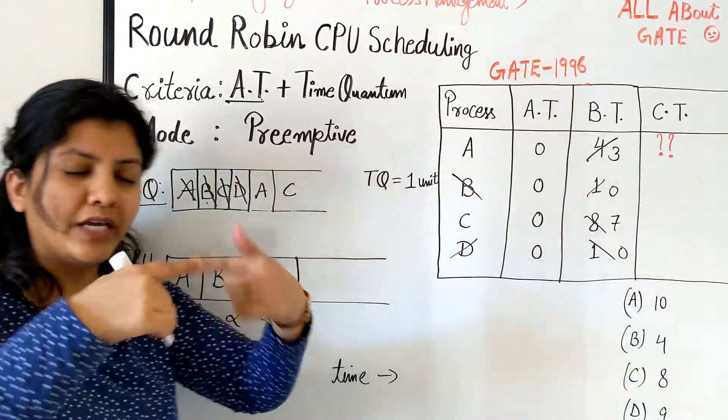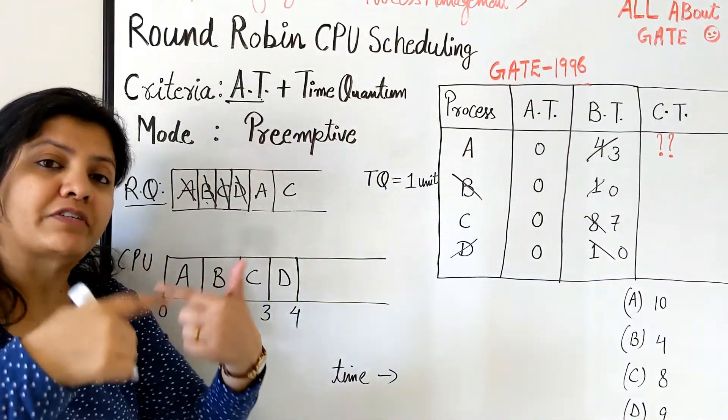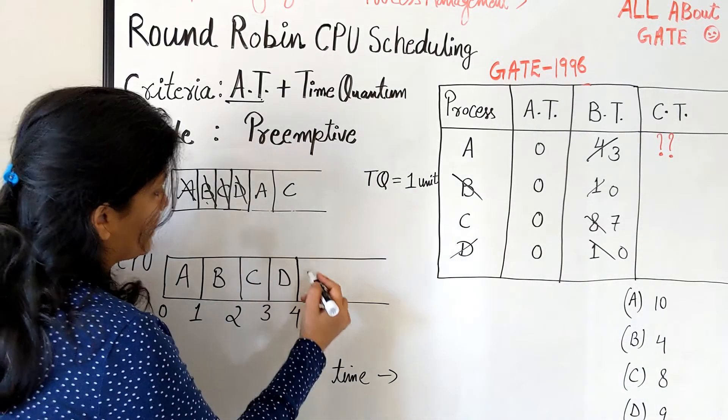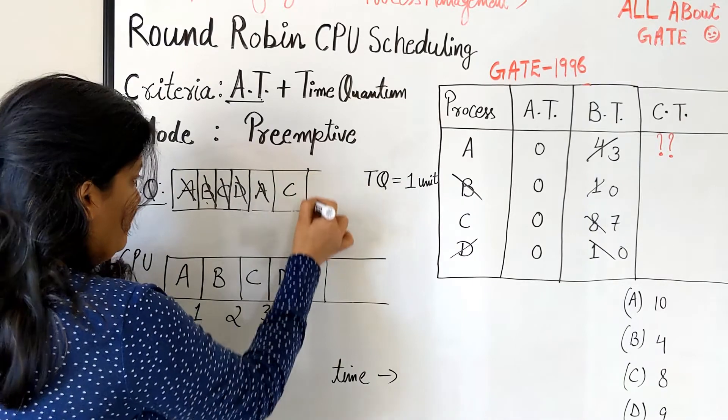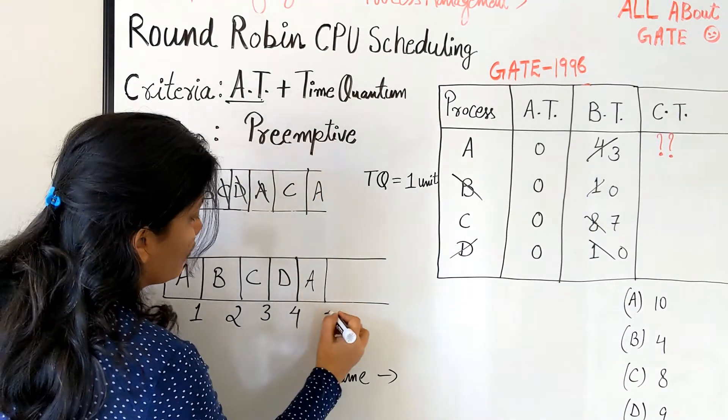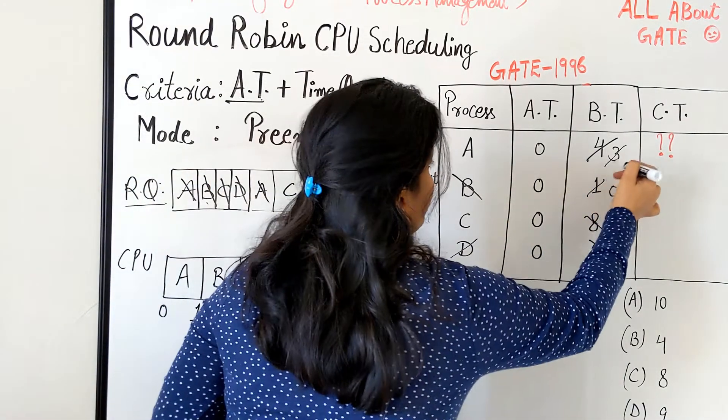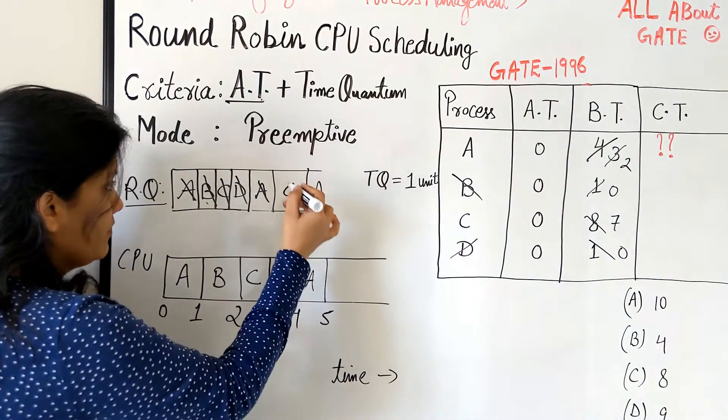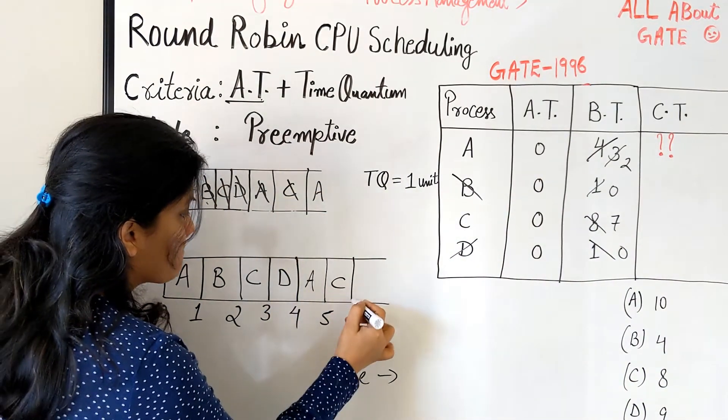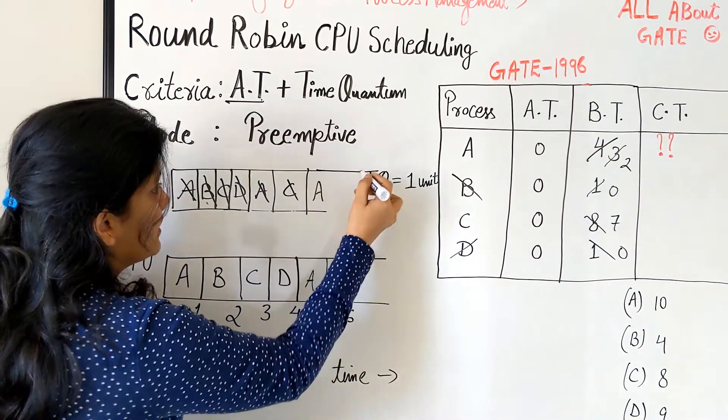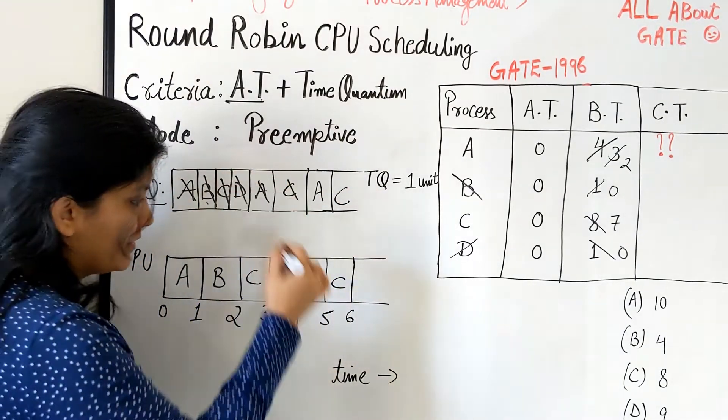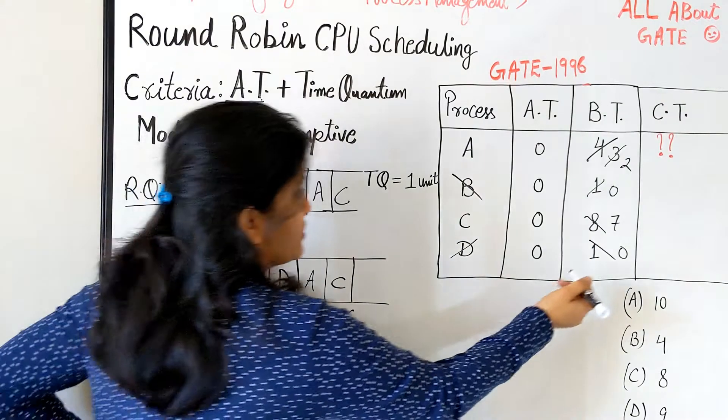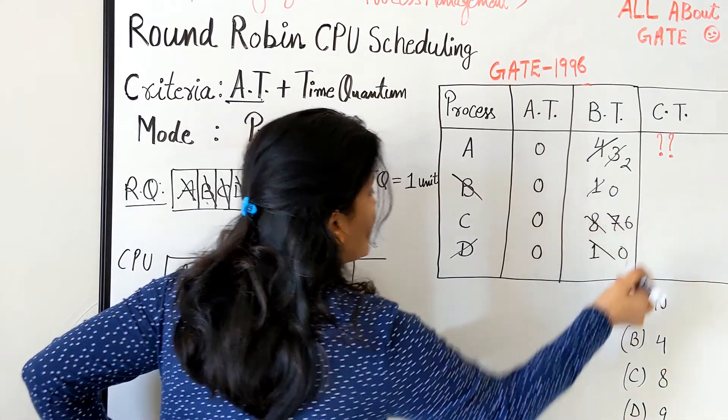Now we just have two processes A and C but their requirements are quite large, 3 and 7. So we have to keep scheduling them one after another for one more time quantum. So let's take A. Keep it back. 4 to 5, becomes 2. Now C, 5 to 6. You need to continue this. Don't forget to write it there. So 5 to 6. So this becomes 6.